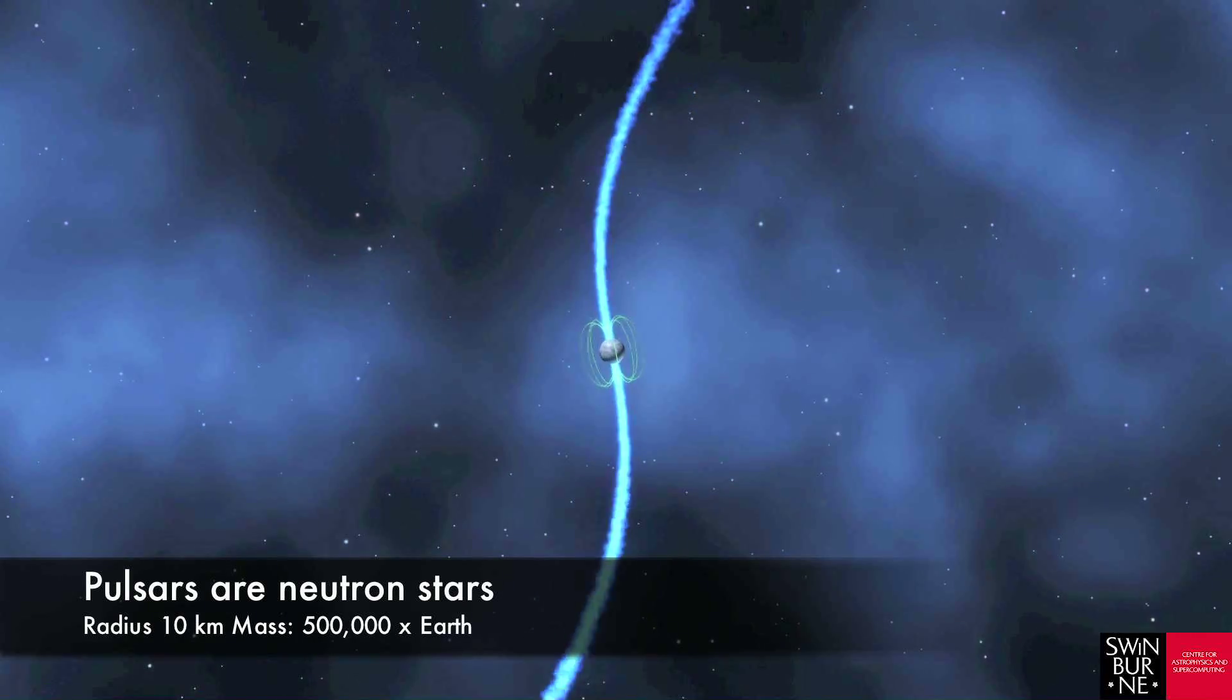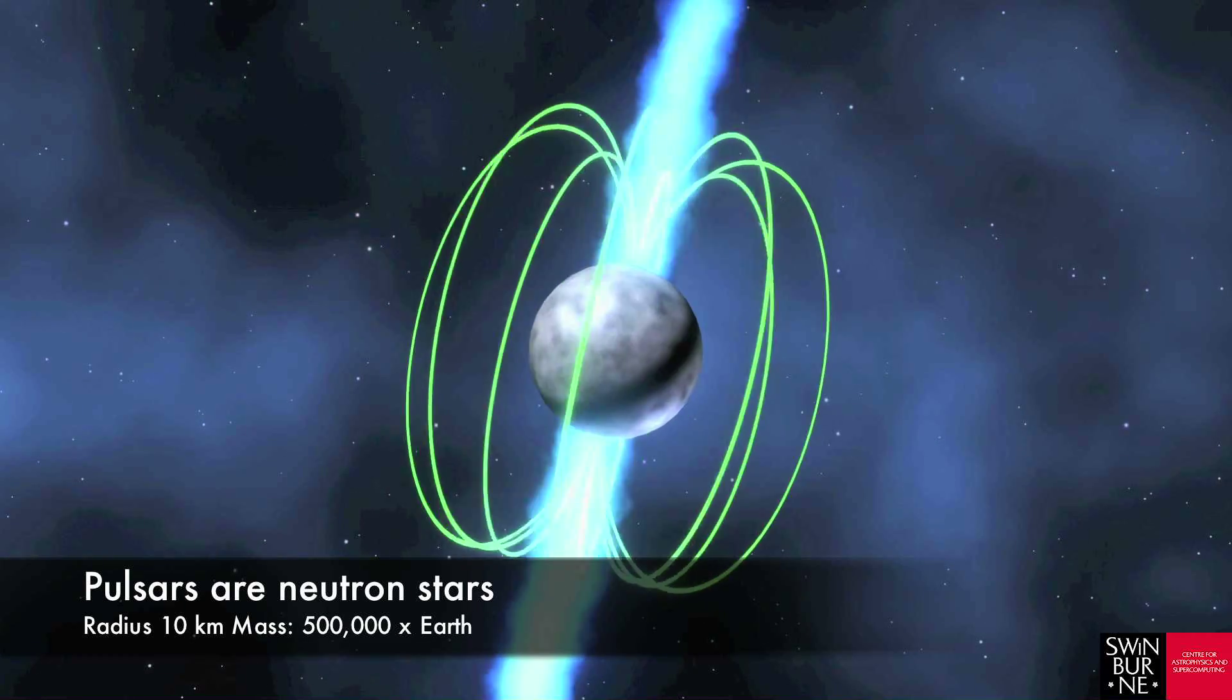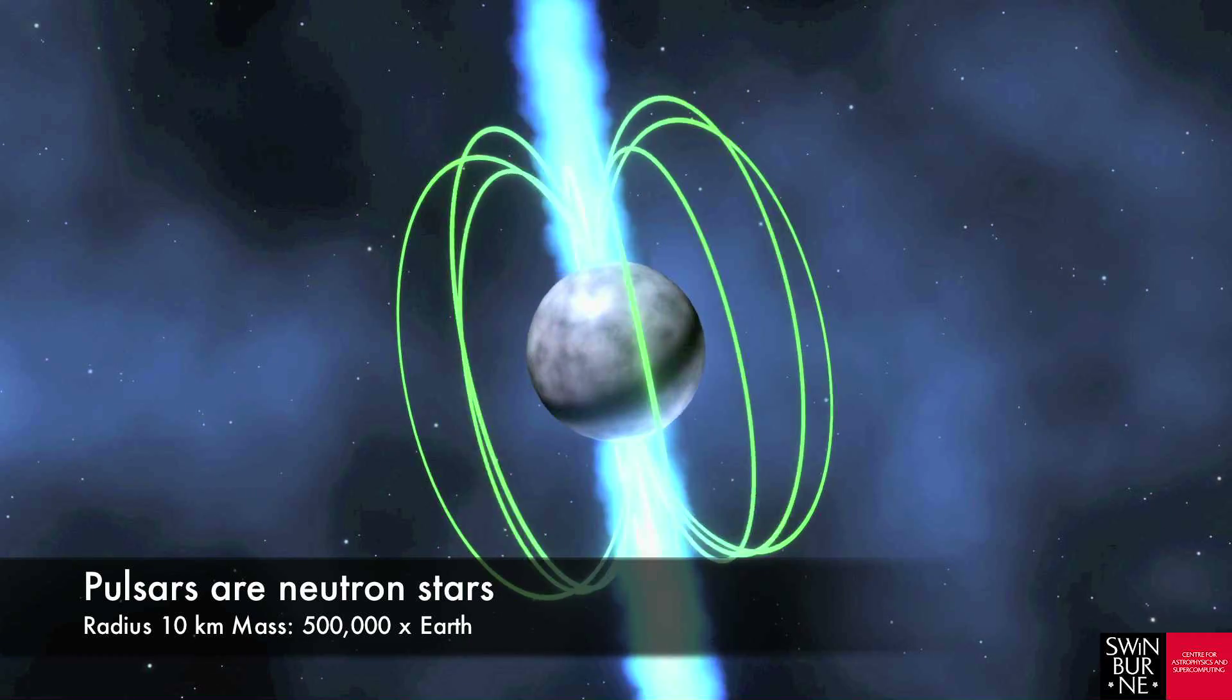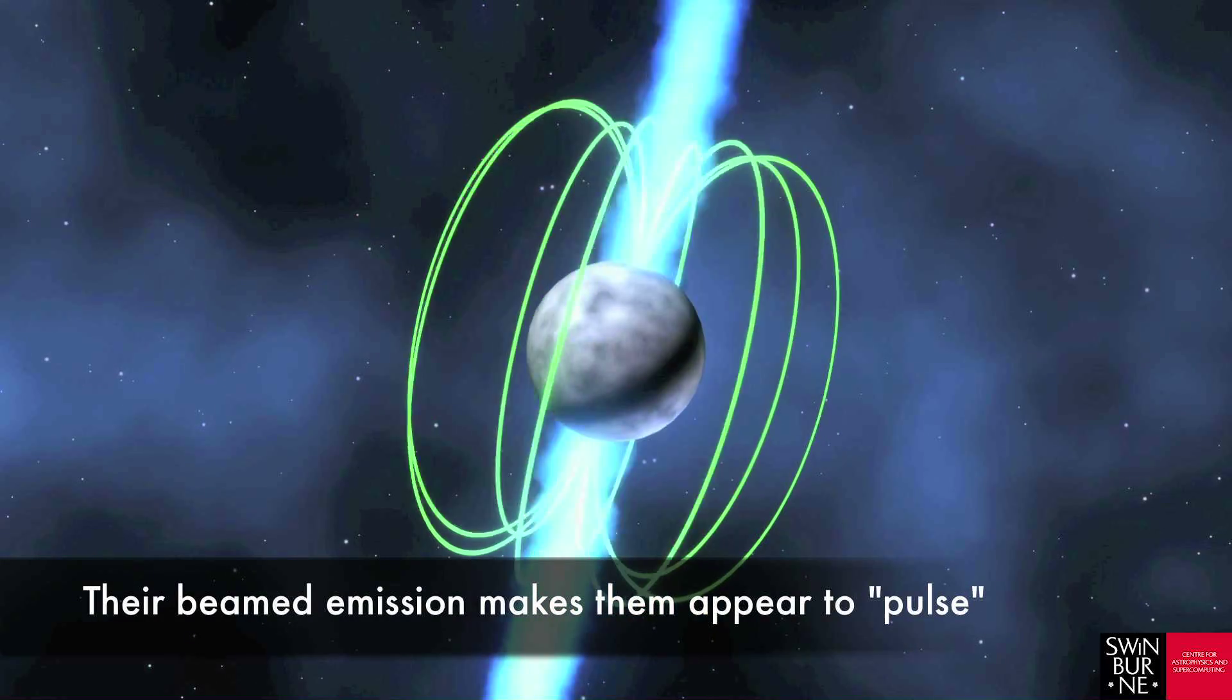Pulsars are neutron stars. They weigh about a half million times as much as the Earth but are only 20km across. Their rotation makes them appear to pulse once per rotation period and they spin up to an amazing 700 times per second.